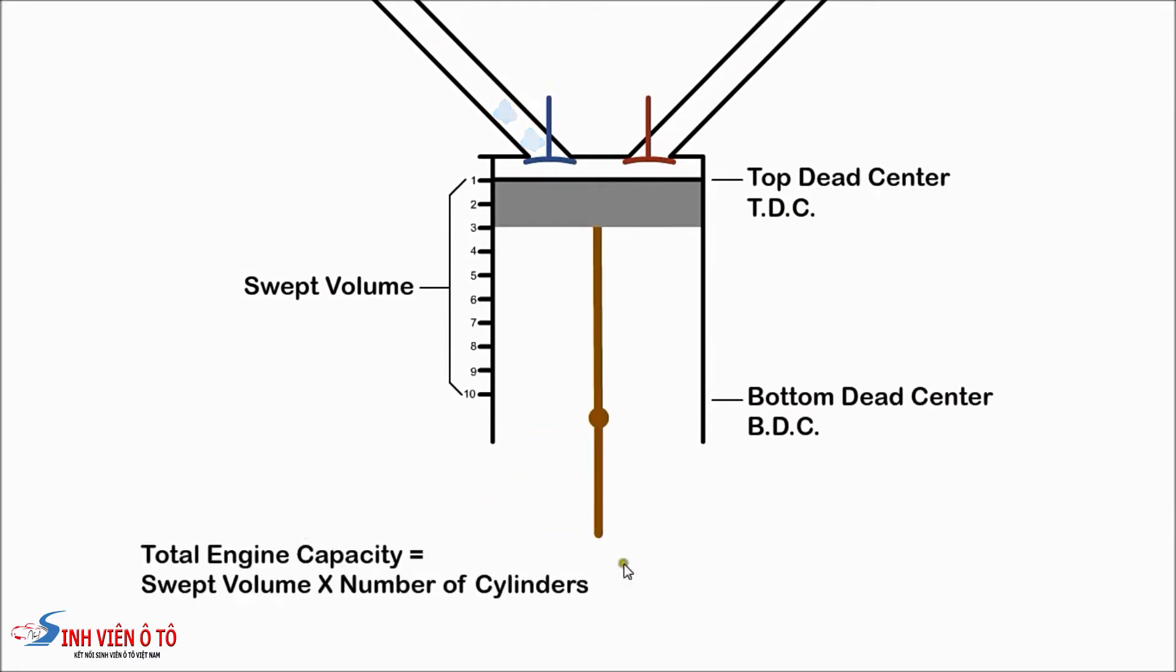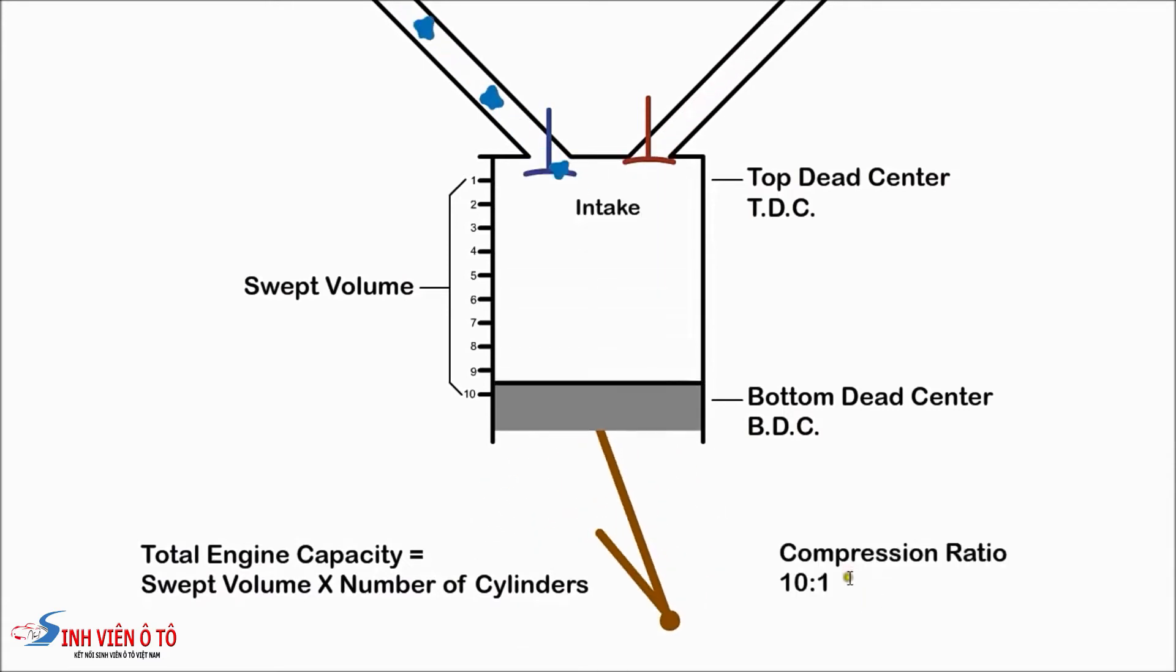The volume between the two is called the swept volume. The total engine capacity is the swept volume multiplied by the number of cylinders. For this engine, the compression ratio is 10 to 1. A diesel engine would be higher, at perhaps 20 to 1.